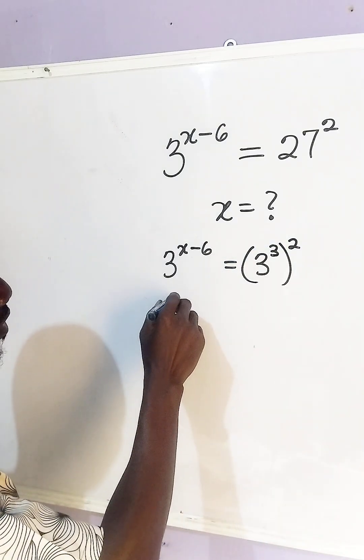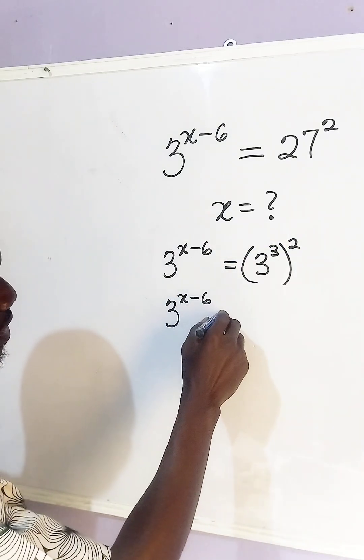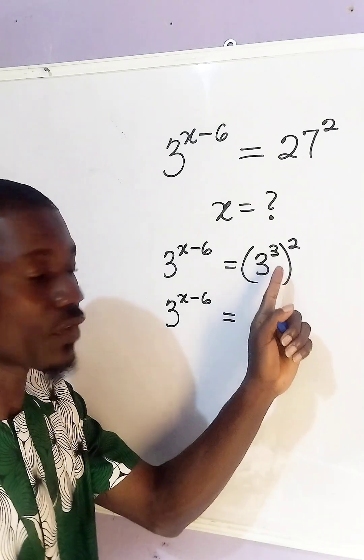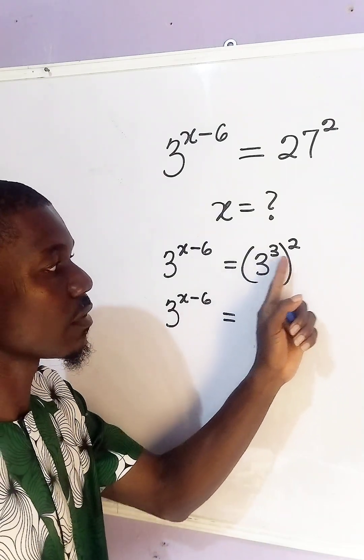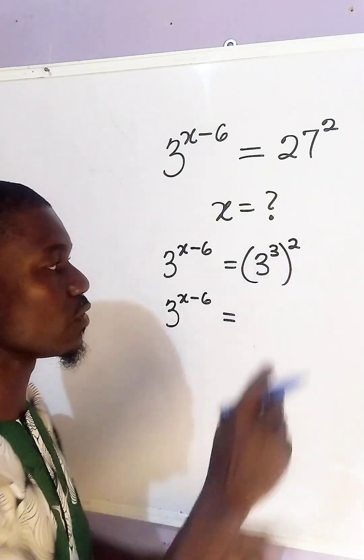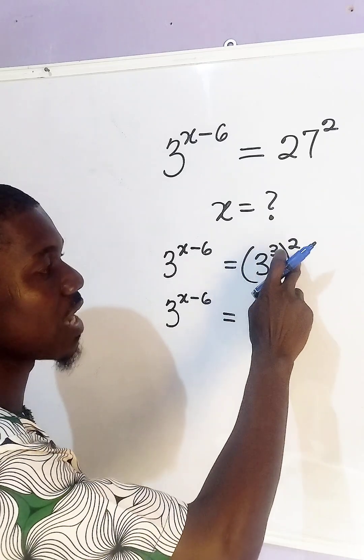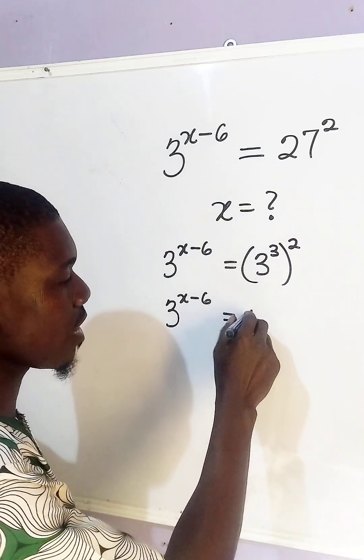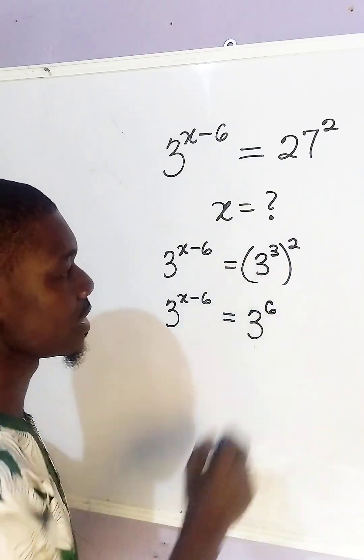So here you have 3 raised to the power of x minus 6. Now according to the law of indices, when you have powers like this, you multiply 3 and 2 together. So here we have 3 raised to the power of 6.